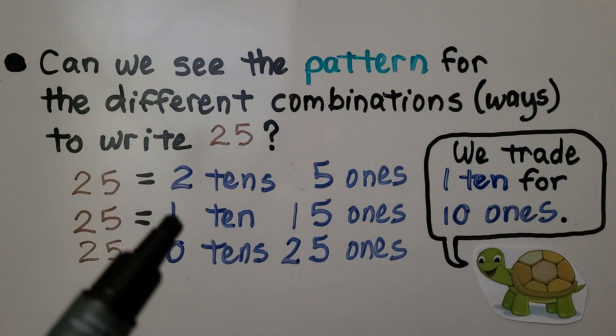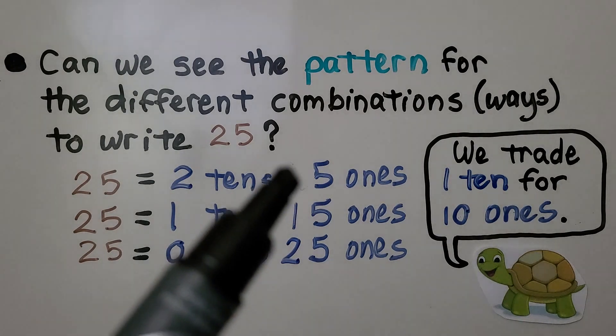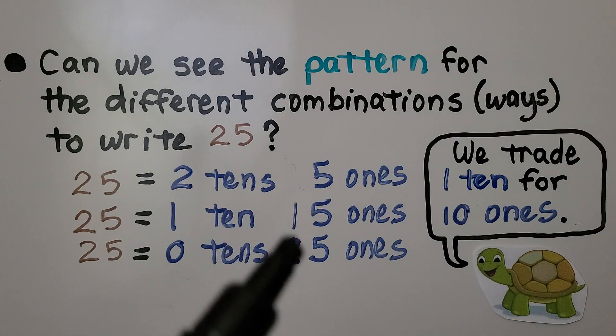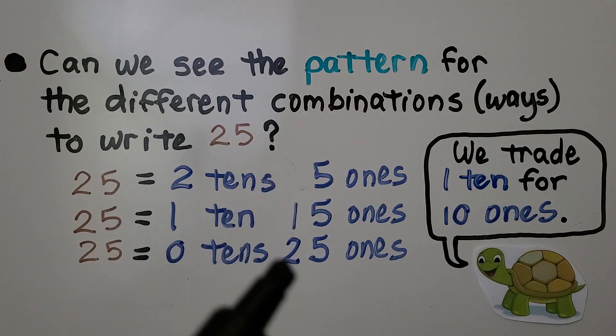We're going 2, 1, 0. And this one is going from 0 to 1 to 2. See how this one is going down in value and this one is going up in value?